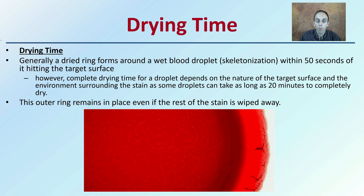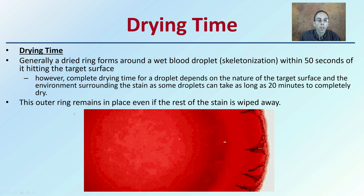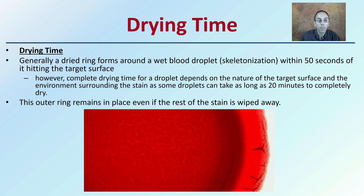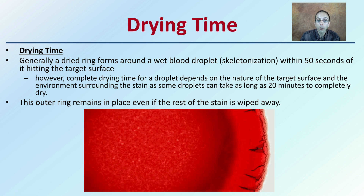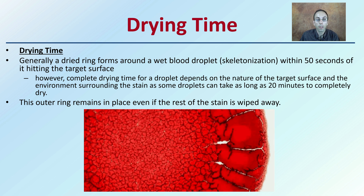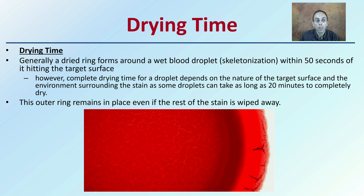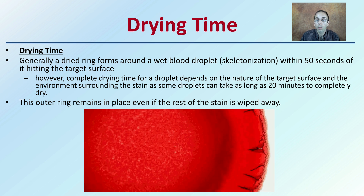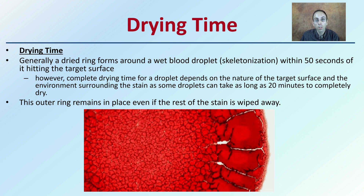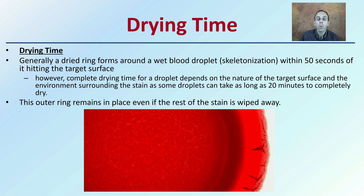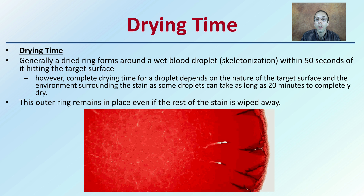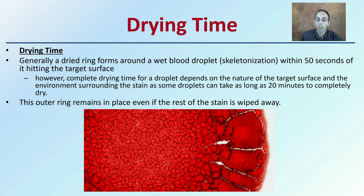There is also the drying time to consider. A ring generally forms around the wet blood droplet — a process called skeletalization — within 50 seconds of hitting the target surface. However, complete drying depends on the nature of the surface and surrounding environment, and some drops can take as long as 20 minutes to fully dry. The outer ring remains in place even if the rest of the stain is wiped away, which can help determine whether blood was dry or not upon arrival at the scene and potentially pinpoint when it first impacted the surface.